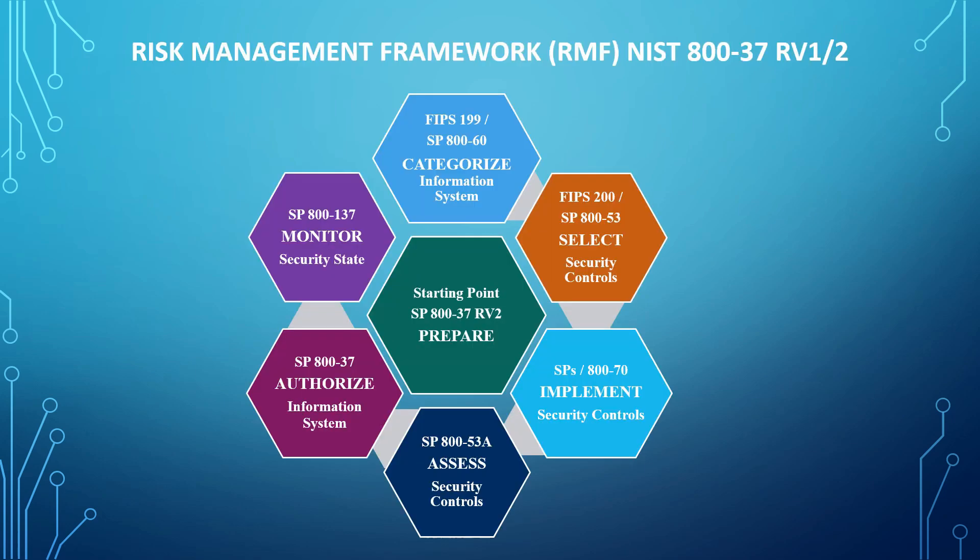The Risk Management Framework NIST 800-37 Rev 1 has six steps. NIST 800-37 Rev 2 has seven steps because a new step was added to the risk management framework, which is the PPS step.